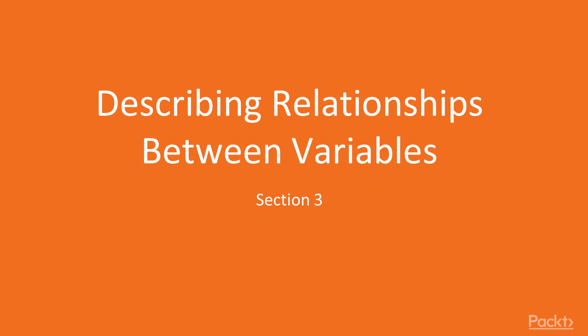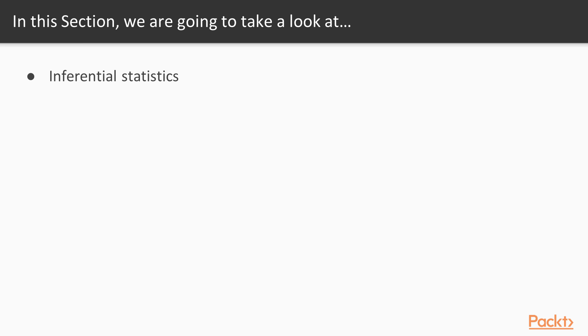Welcome to section 3. In this chapter, we're going to talk about describing relationships between variables. Up until this point, we've talked about how to obtain descriptive statistics. But in this chapter, we're going to go a step further and talk about how to get inferential statistics, because most of the time we're not just interested in our actual sample, but we're interested in taking that data from our sample and making inferences over to the larger population. So that's what we're going to talk about first in this chapter — the idea of inferential statistics and some of the aspects that go into being able to make those kinds of inferences.